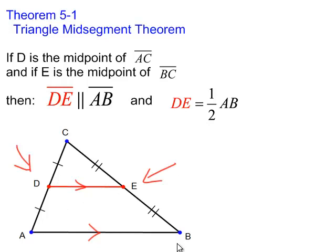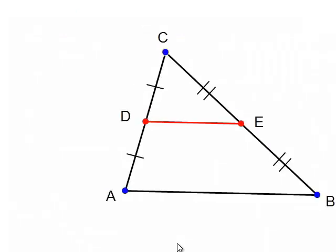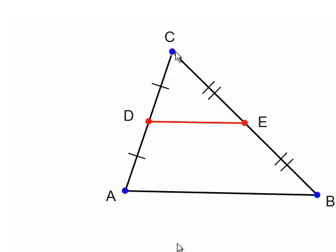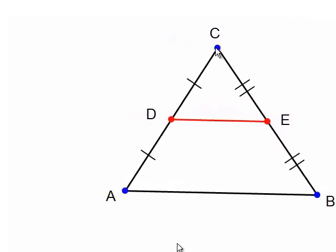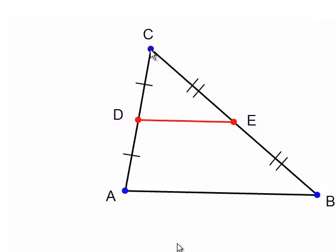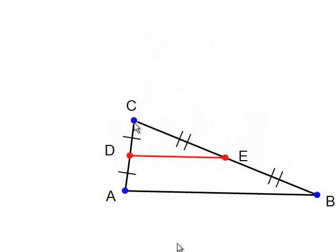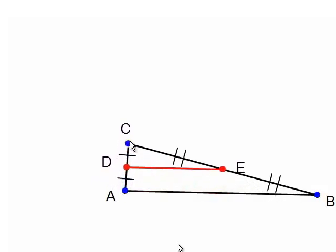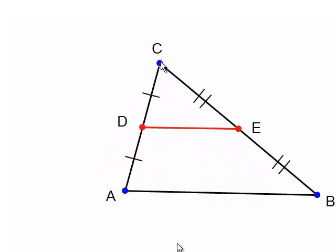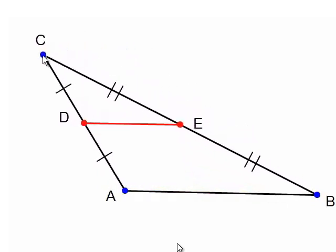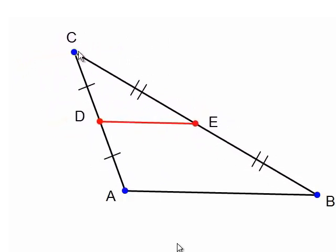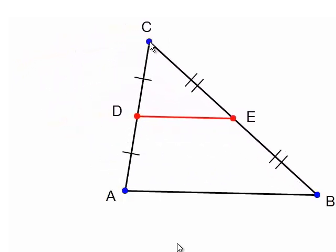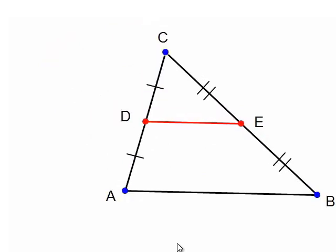I made a video to illustrate that. As you can see, when I dragged point C around, DE certainly looked like it was half the length of AB.